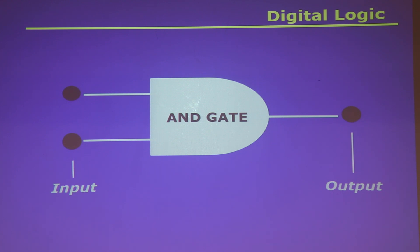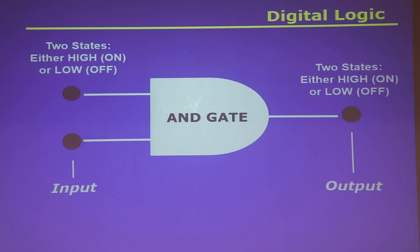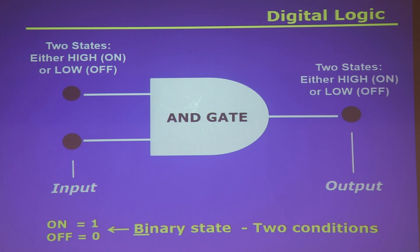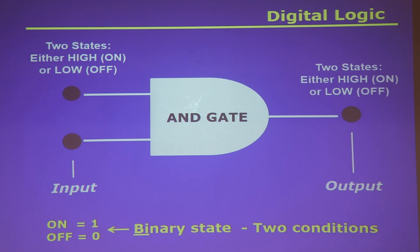Everything is becoming digital — we're talking about ones and zeros, on states or off states. Your radios have microprocessors in them. Software-defined radios use microprocessors to process your signal. So you have either off, which is a zero, or on, which is a one — it's called a binary state. This AND gate uses two binary states to control the output. For there to be a high output, I have to have a high on both inputs — that satisfies the AND requirement.